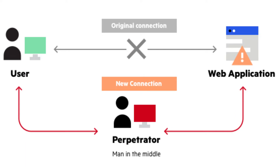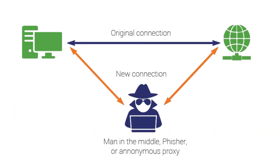So today we're going to talk about man-in-the-middle attacks. A man-in-the-middle attack is a general term for when a hacker positions himself in between a consumer and an application, either to eavesdrop or to impersonate one of the parties, making it appear as if a normal exchange of information is underway.